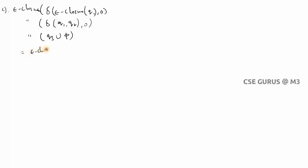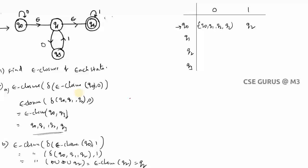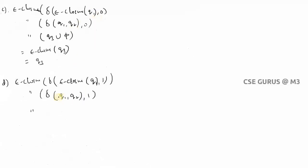For Q1 on input 1: e-closure(Q1) = {Q1, Q2}. Now δ(Q1, 1) = nothing (∅), δ(Q2, 1) = Q2. So we get {Q2}. Then e-closure(Q2) = {Q2}. Therefore the result for Q1 on input 1 is {Q2}.